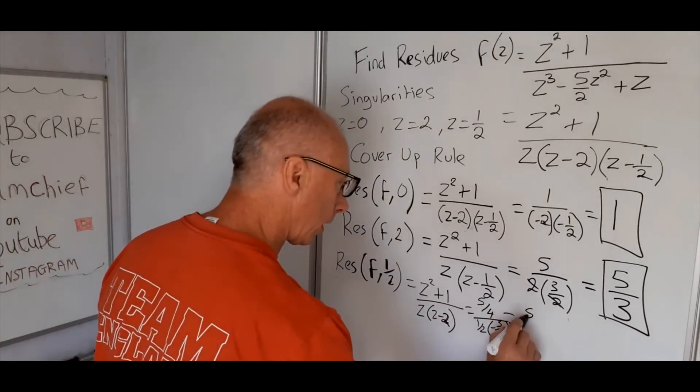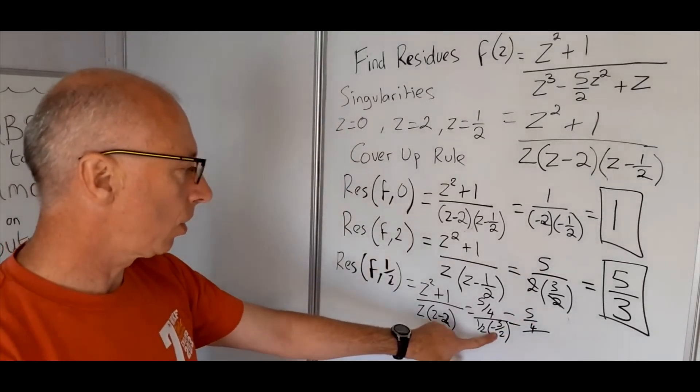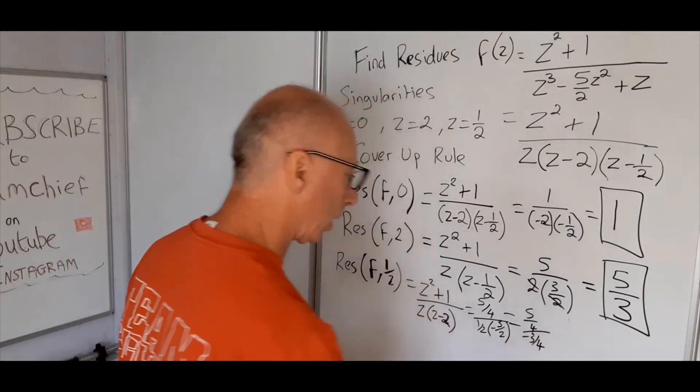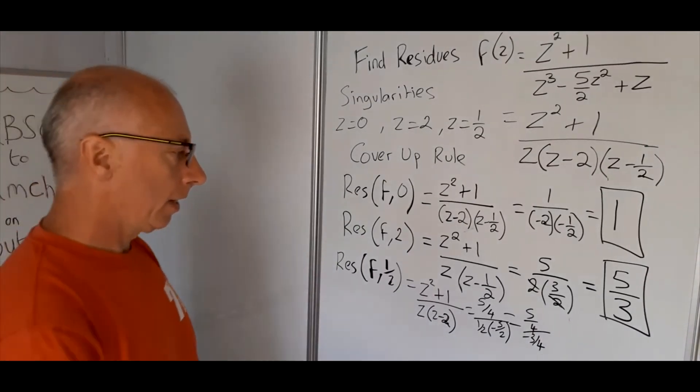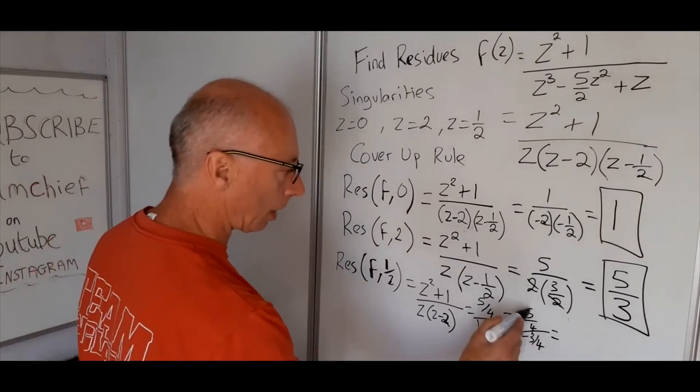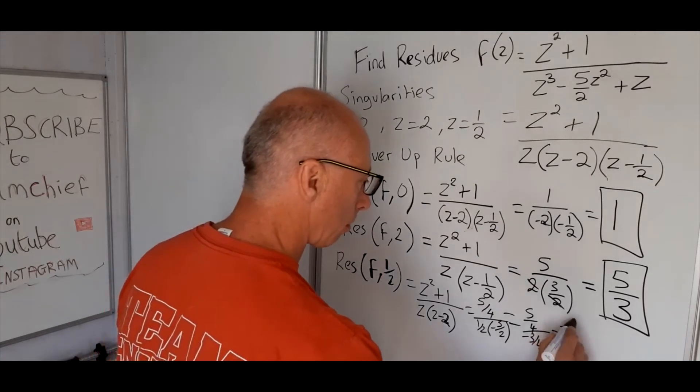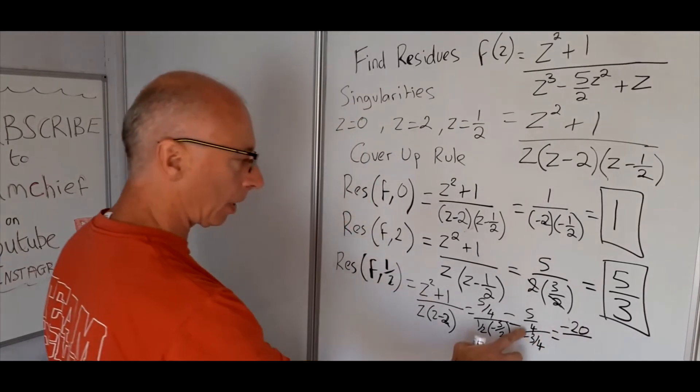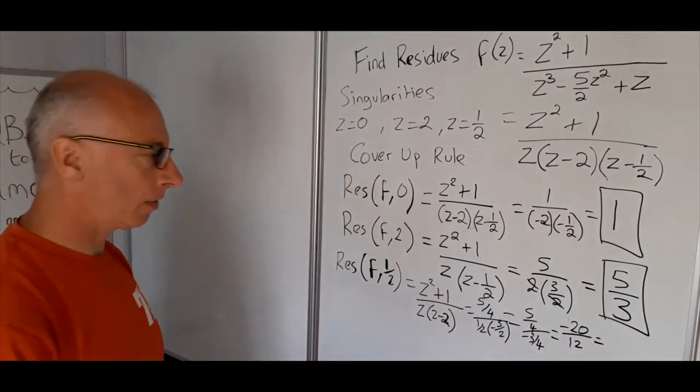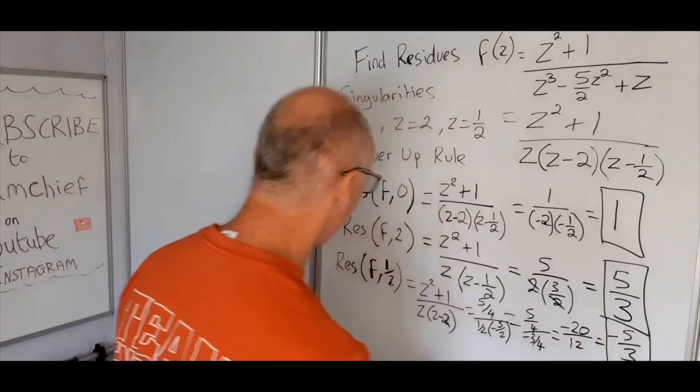Let's go again. 5 over 4 divided by half times minus 3 over 2 is going to give us minus 3 over 4. So what's this going to equal? So what we can do now is 4 times the 5. So we do the top and the bottom in this complex fraction here. So that's going to give us minus 20 divided by 12. So that's going to give us minus 5 over 3. And that's our answer for this residue.